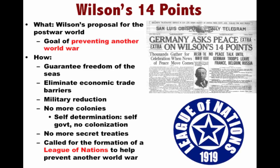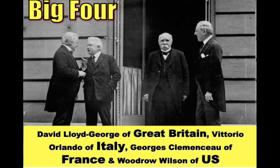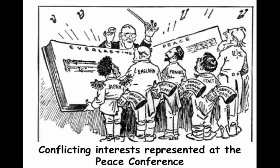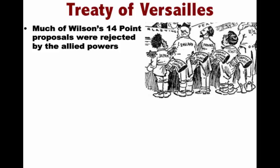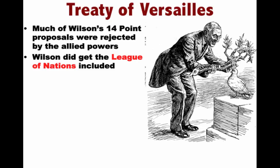The problem for Wilson is he does not get to dictate the terms of the post-war settlement. He has to work with the Big Four — Wilson, England, Italy, and France. These allies are not as idealistic as Wilson. In the political cartoon, he's kind of asking for everlasting peace, but nations such as France and England want to punish Germany, gain territory, and use the war as an opportunity to benefit their country. So while Wilson wants peace without victory, the other allies are not really interested in his idealistic ideas. The Treaty of Versailles very much reflects this rejection of much of Wilson's 14 Points.